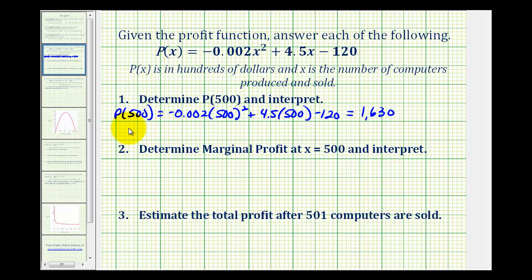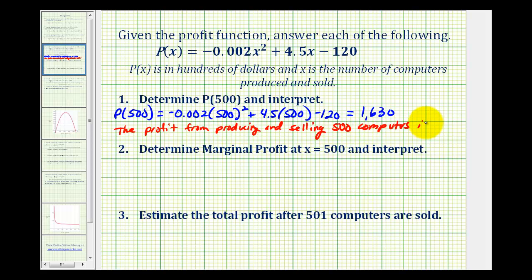So this means the profit from producing and selling 500 computers is $163,000. This is 1,630 times 100 to get the total profit.